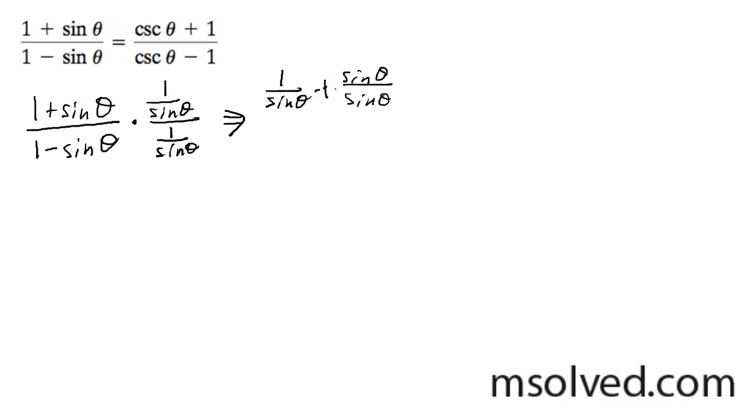That should be plus. That becomes 1. We get 1 over sine theta plus sine theta. This should be minus. Sorry. Sine theta becomes 1.